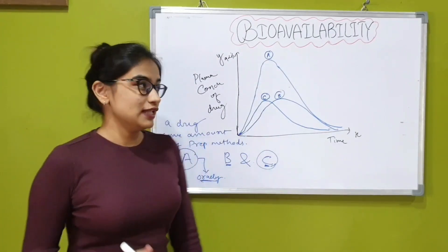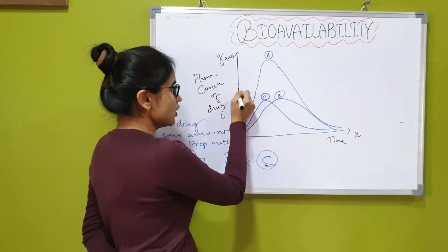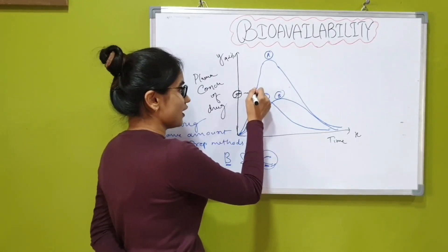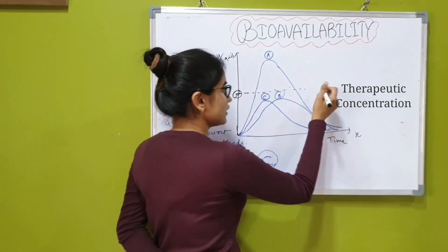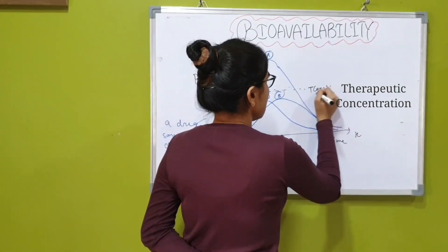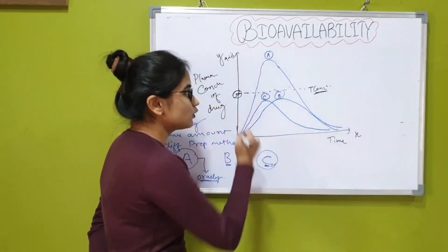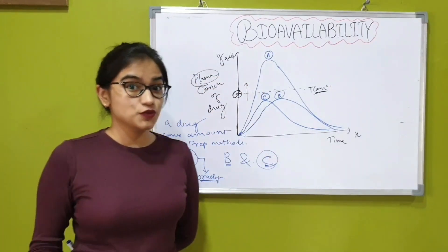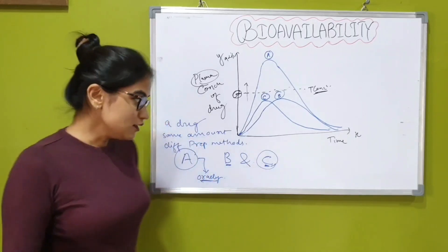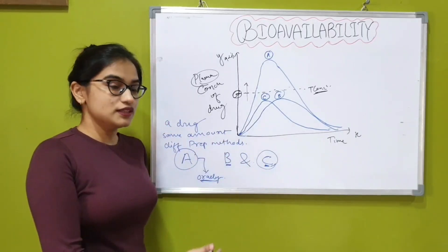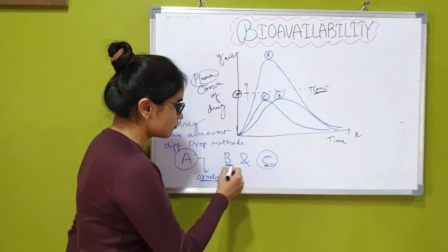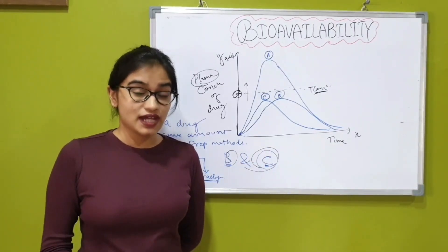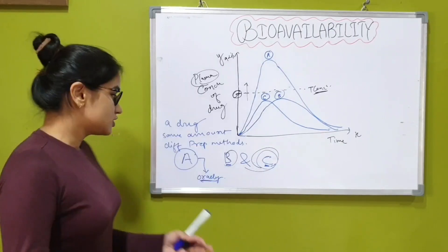Another thing is that the therapeutic concentration that is determined of this drug is here at this point of the graph. If the drug cannot cross this concentration in the plasma then it cannot produce therapeutic effects. That means not only the oral bioavailability of B and C is lower, they cannot even produce the significant effects that are needed in the body.